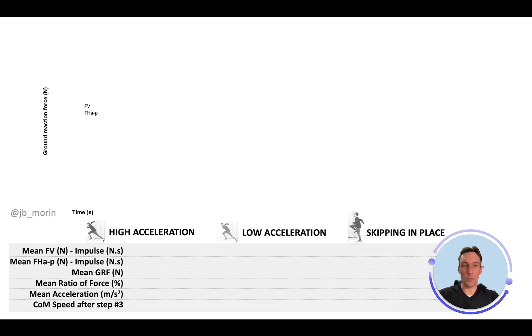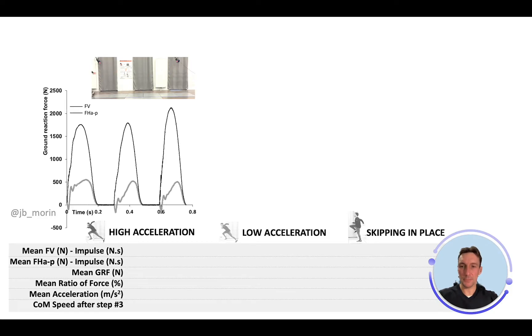Here's the example of the maximum acceleration sprint start. You see me pushing forward and moving forward on my force plates. These are the traces of the two components in the sagittal plane of the ground reaction force.